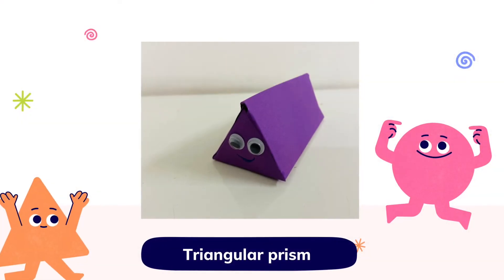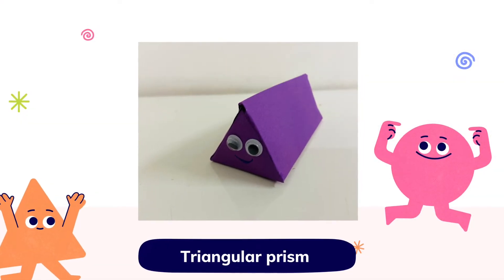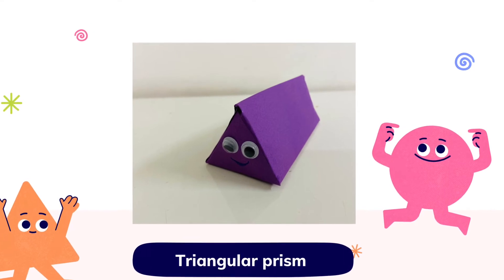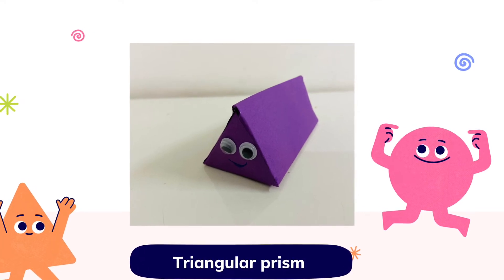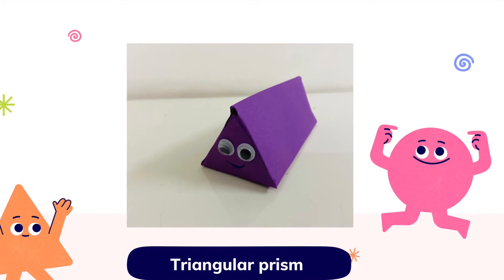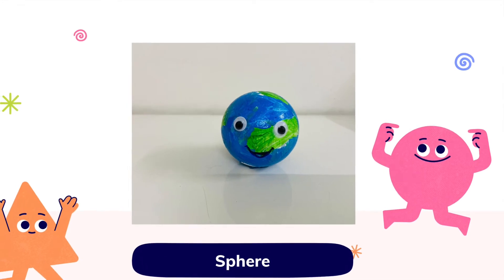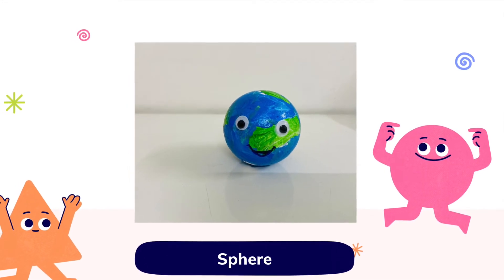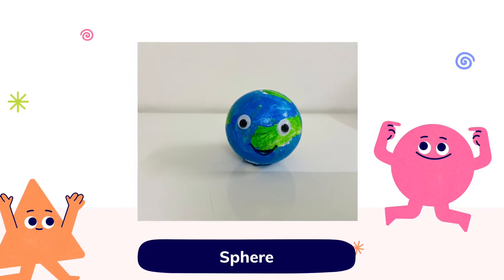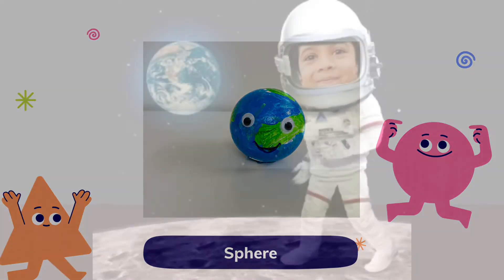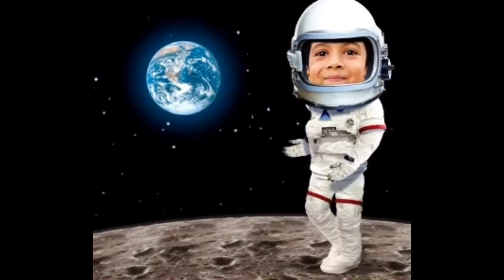A triangular prism has five flat faces, nine edges, and six vertices. A sphere has one curved surface, zero flat faces, zero edges, and zero vertices.